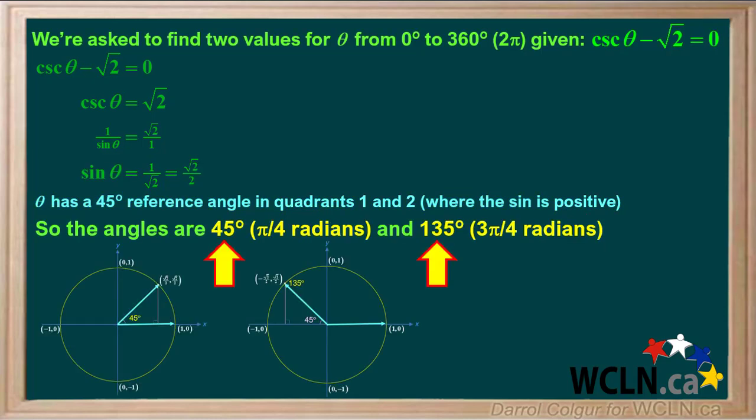The angle theta in quadrant 1 is 45 degrees, which is pi over 4 radians, and in quadrant 2 is 135 degrees, which is 3 pi over 4 radians.